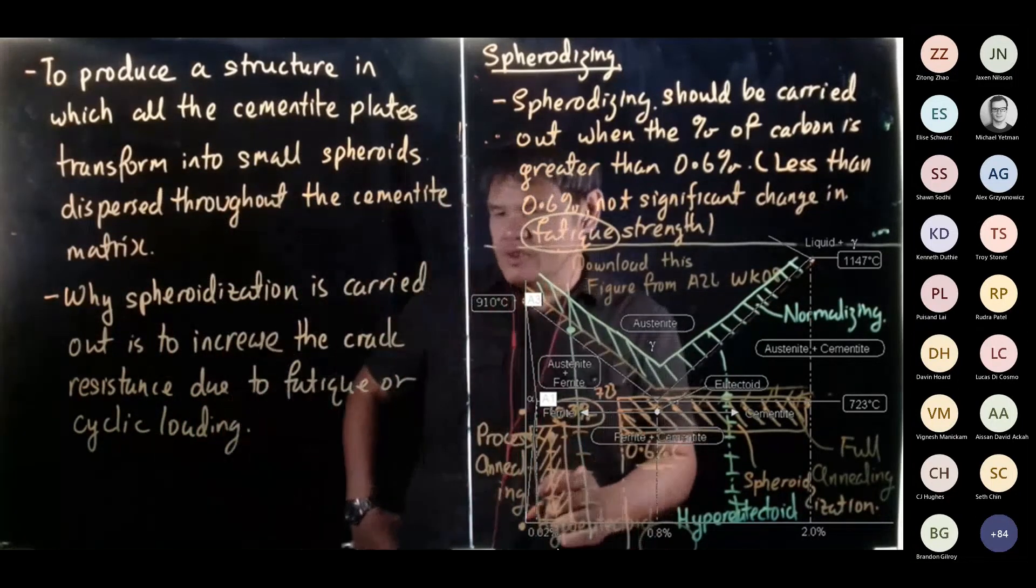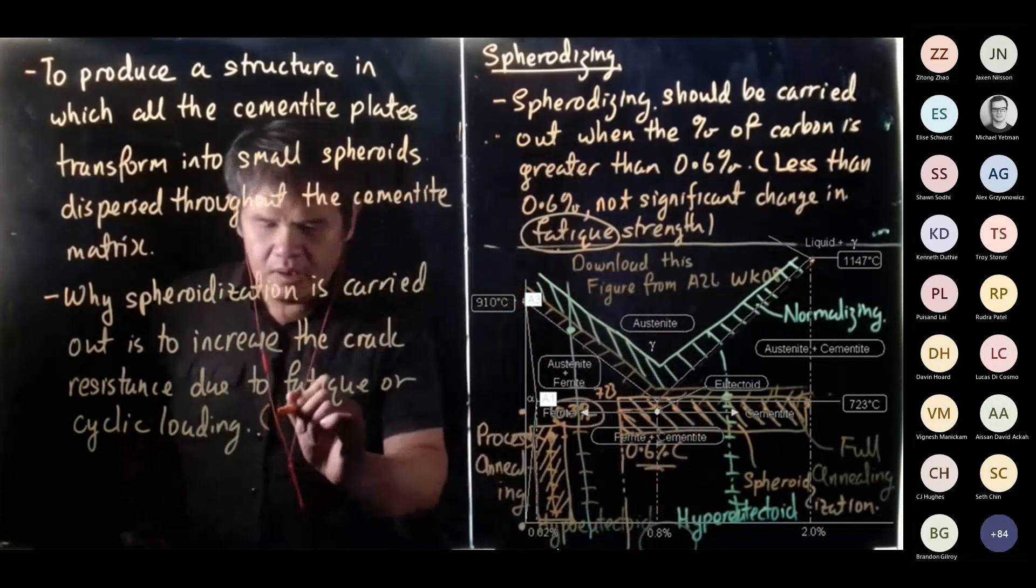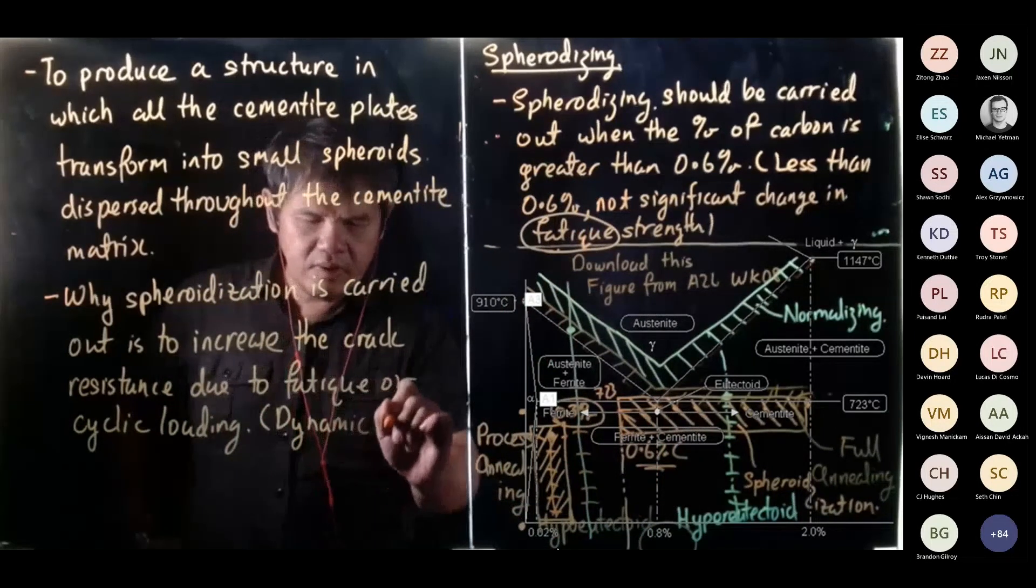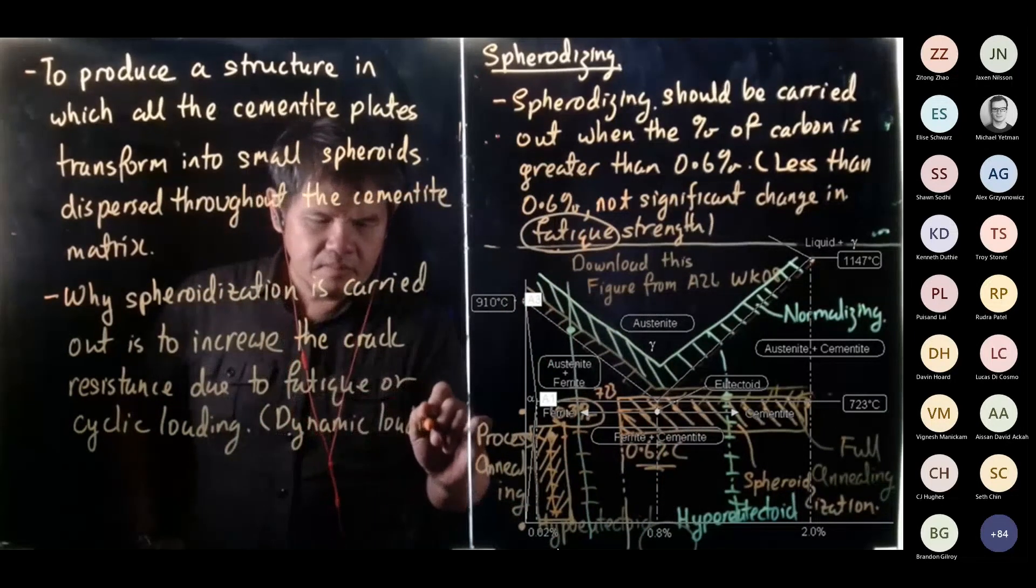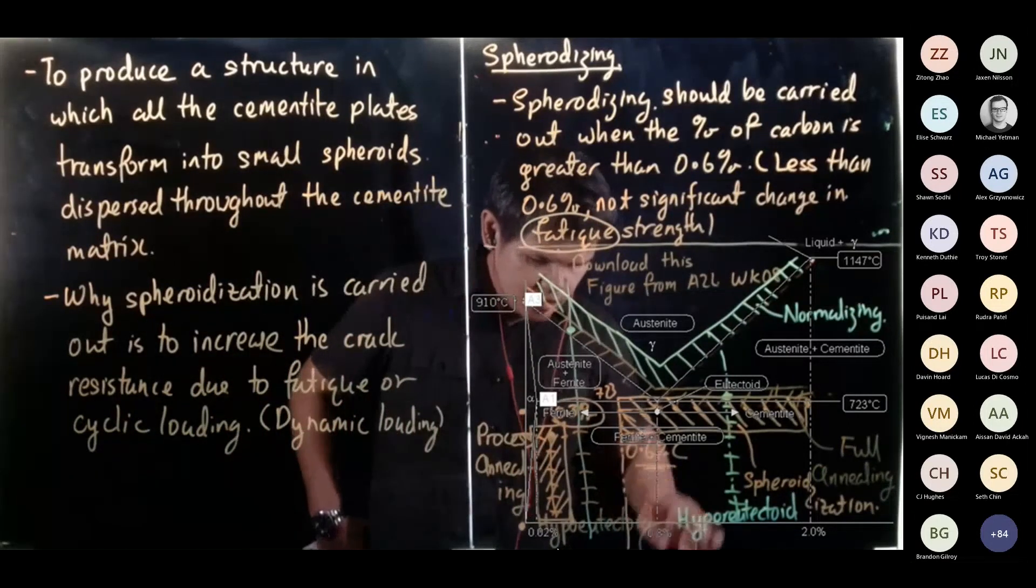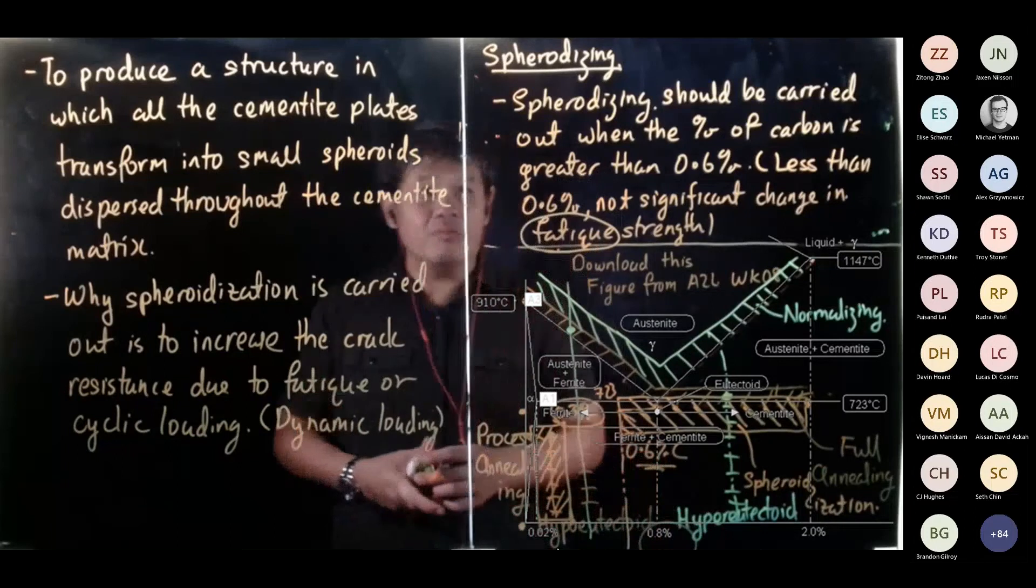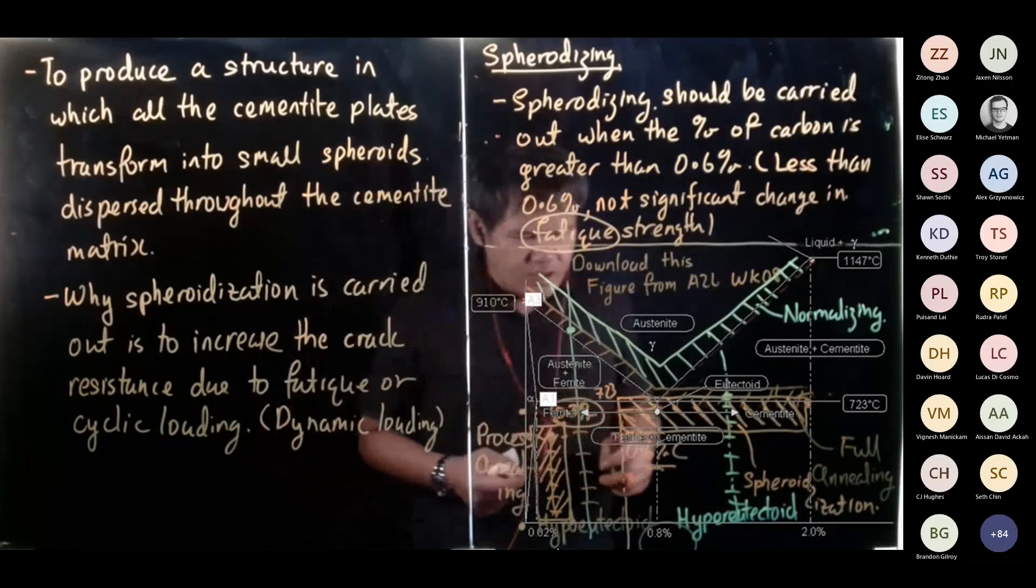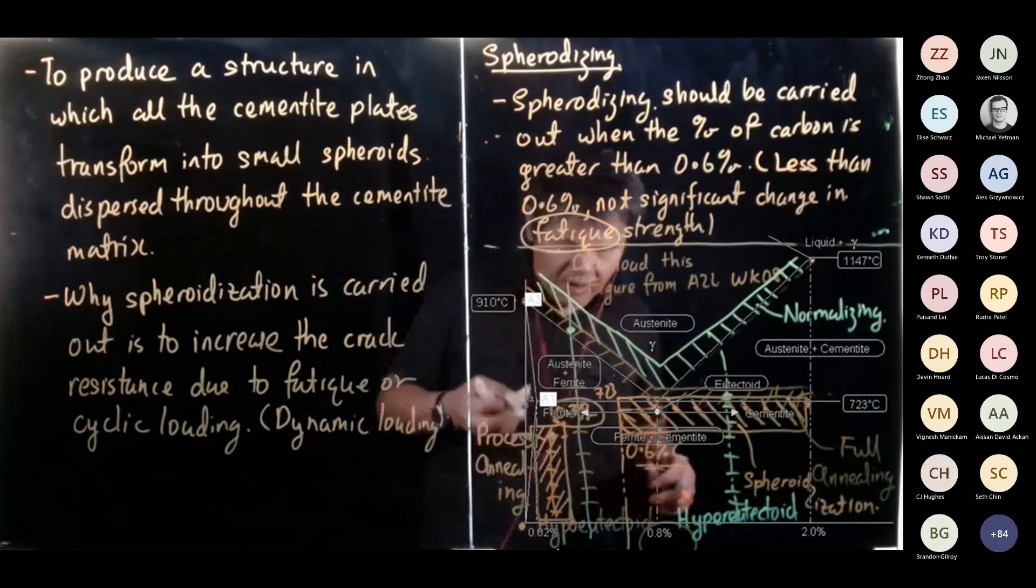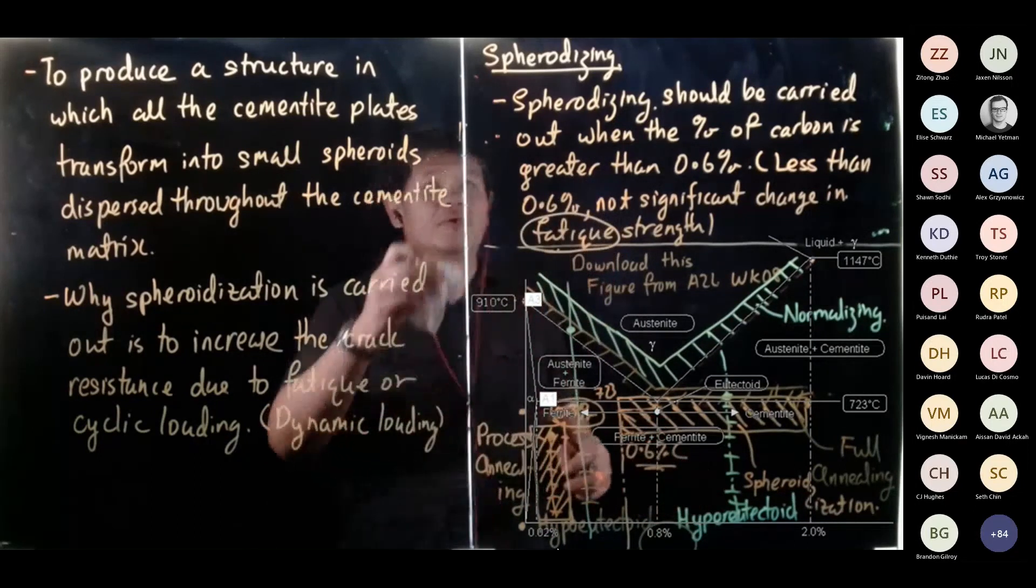So when we see the word cyclic loading, it's basically dynamic loading. Non-steady state. Later on I will draw. What we are trying to do down here, I will sketch for you in terms of the microstructure. What are we trying to do down here?